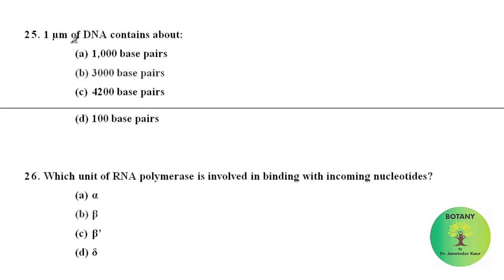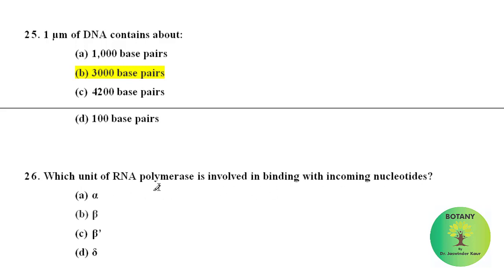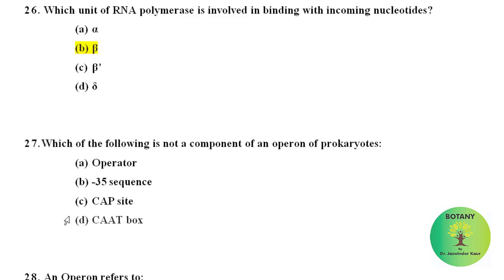One micrometer of DNA contains about 3000 base pairs. Which unit of RNA polymerase is involved in binding with incoming nucleotides? The RNA polymerase beta unit is involved in binding with incoming nucleotides.